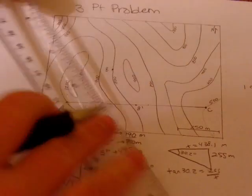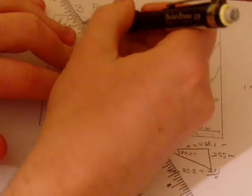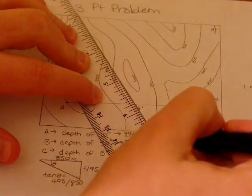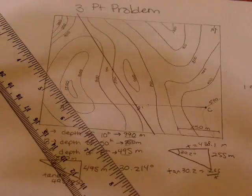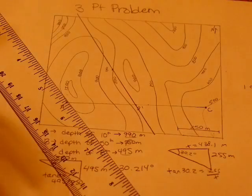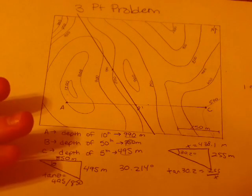So the line from B to B', I'm going to draw this in pretty dark. That is your strike. That's your strike direction. Because those two points have the same elevation. We know that any two points with the same elevation define strike.